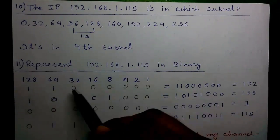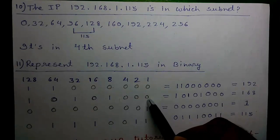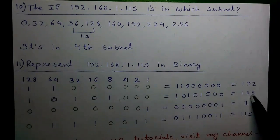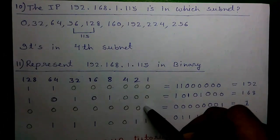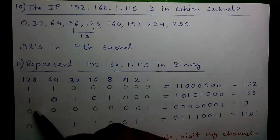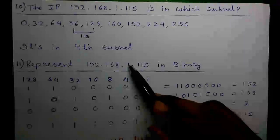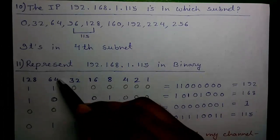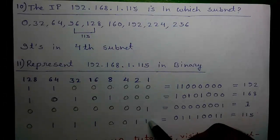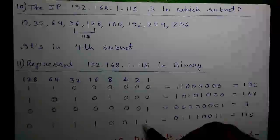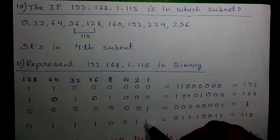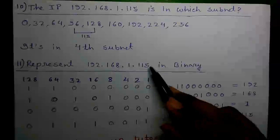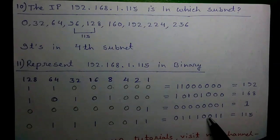The binary equivalent of 168 is 10101000. For the octet value 1, we need only the ones position, so the binary equivalent is 00000001. For 115 we need 64 plus 32 plus 16 plus 2 plus 1. We place 1 below those positions and 0 below the others. The binary equivalent of 115 is 01110011. So the full binary representation of 192.168.1.115 is 11000000.10101000.00000001.01110011.